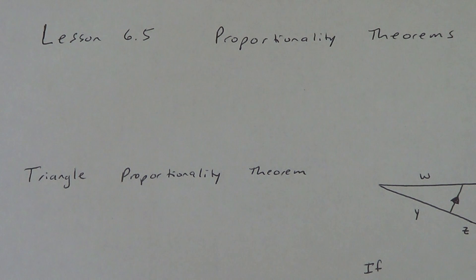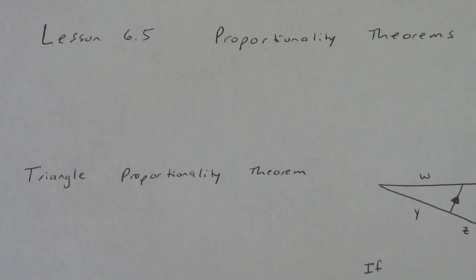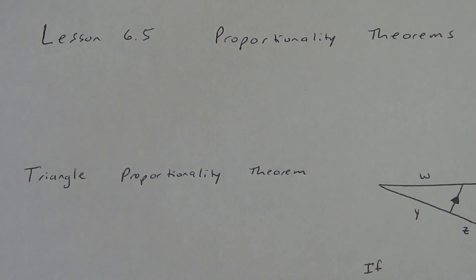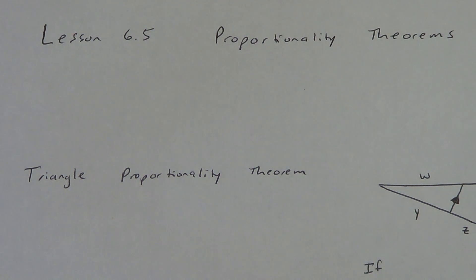Our first one is called the Triangle Proportionality Theorem. Obviously, by its name, it has to do with proportions. So what does the Triangle Proportionality Theorem say? Let's write this out. I'll show you a quick picture of it — you can see a little bit of that picture over to the side. Then we're going to do more examples in the second video.